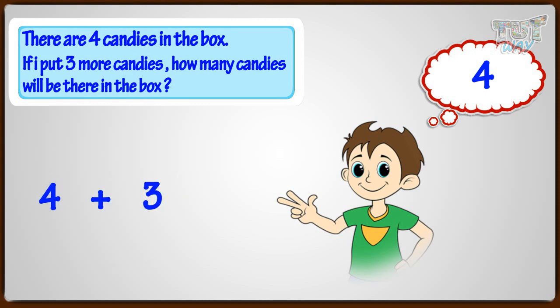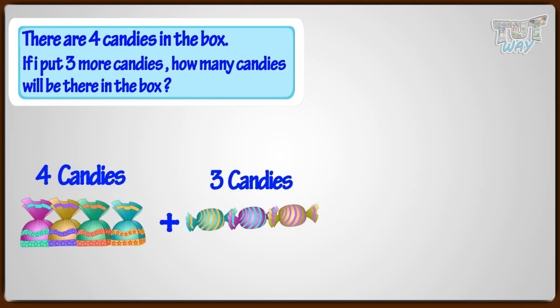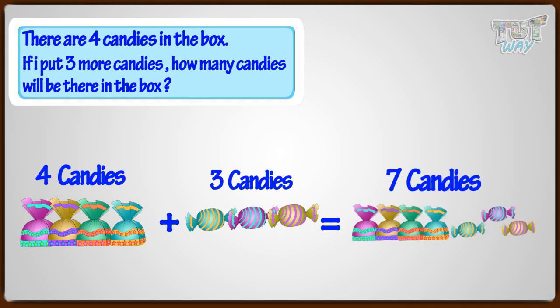Yeah! Four plus three equals seven. Four candies plus three candies will be seven candies.